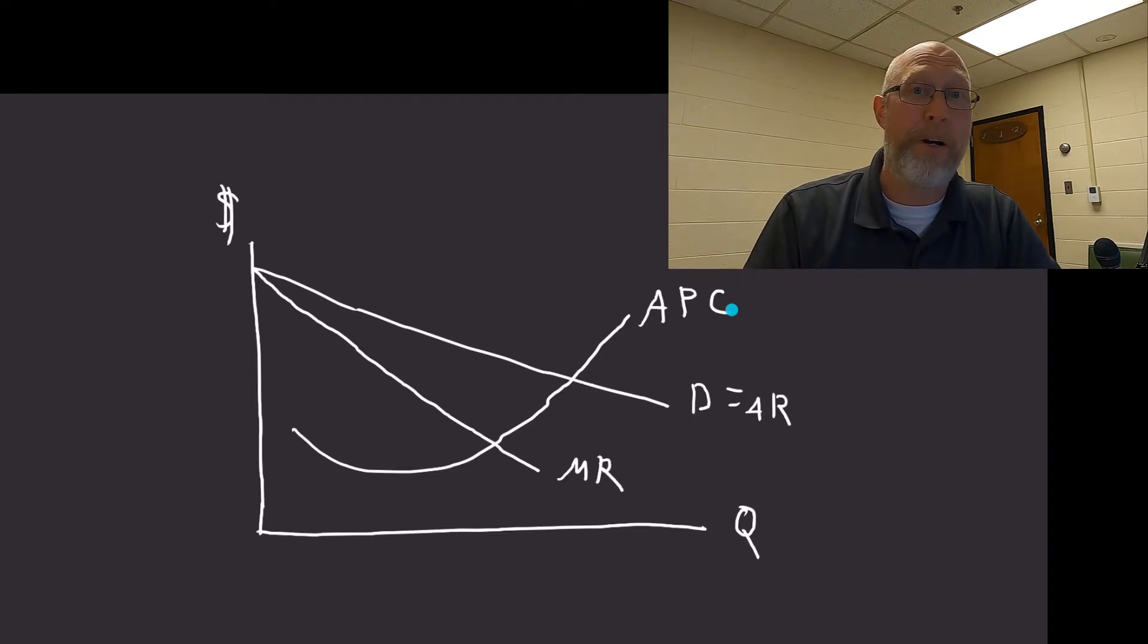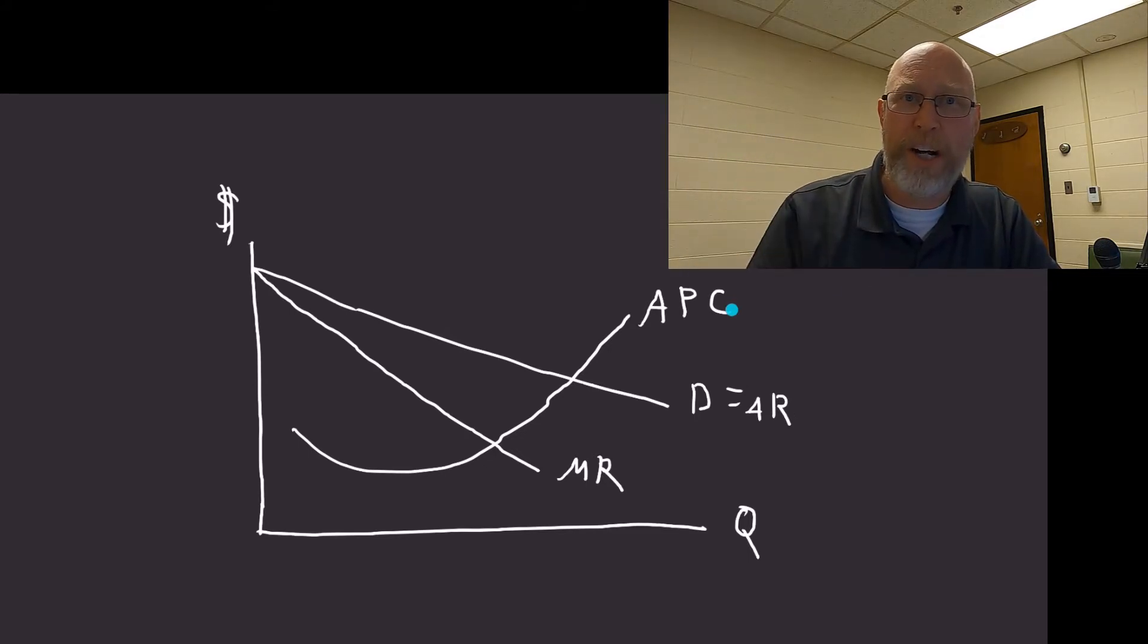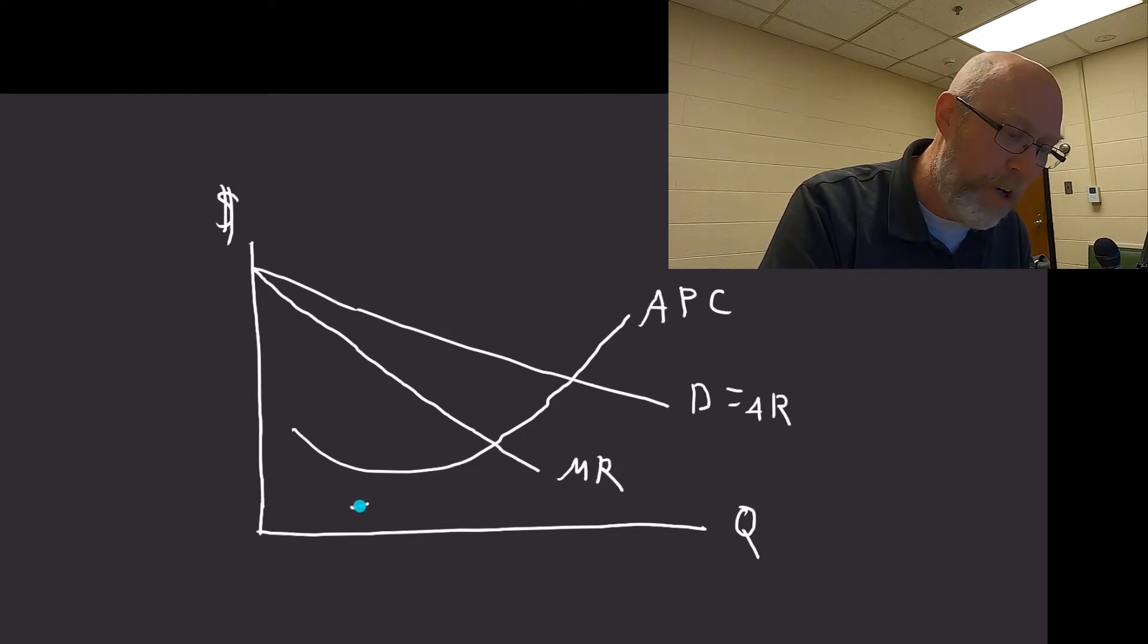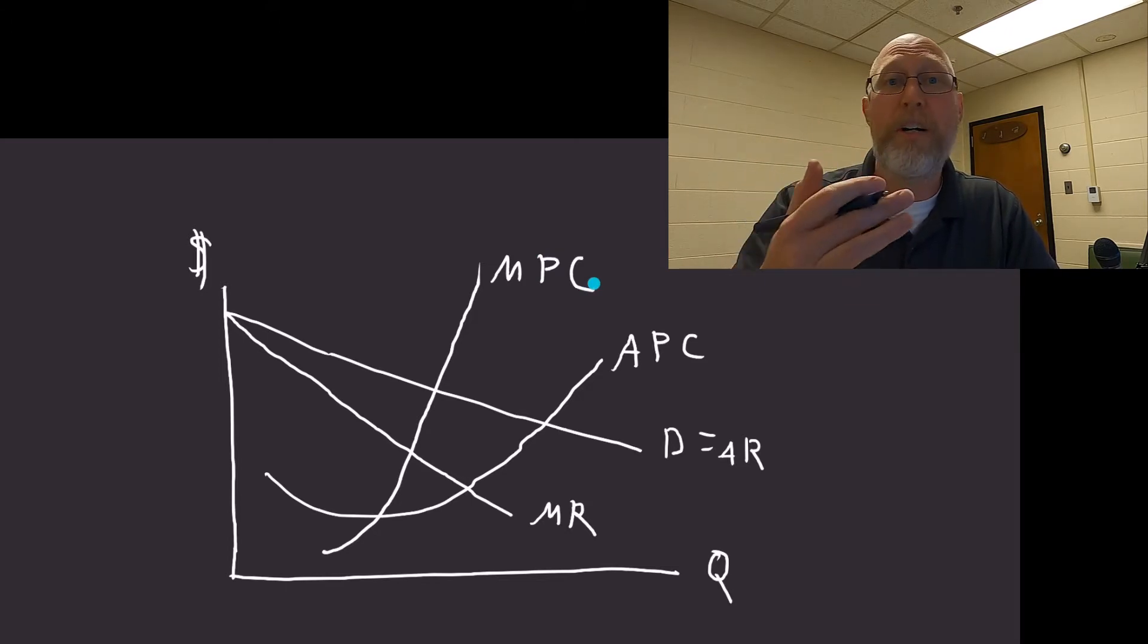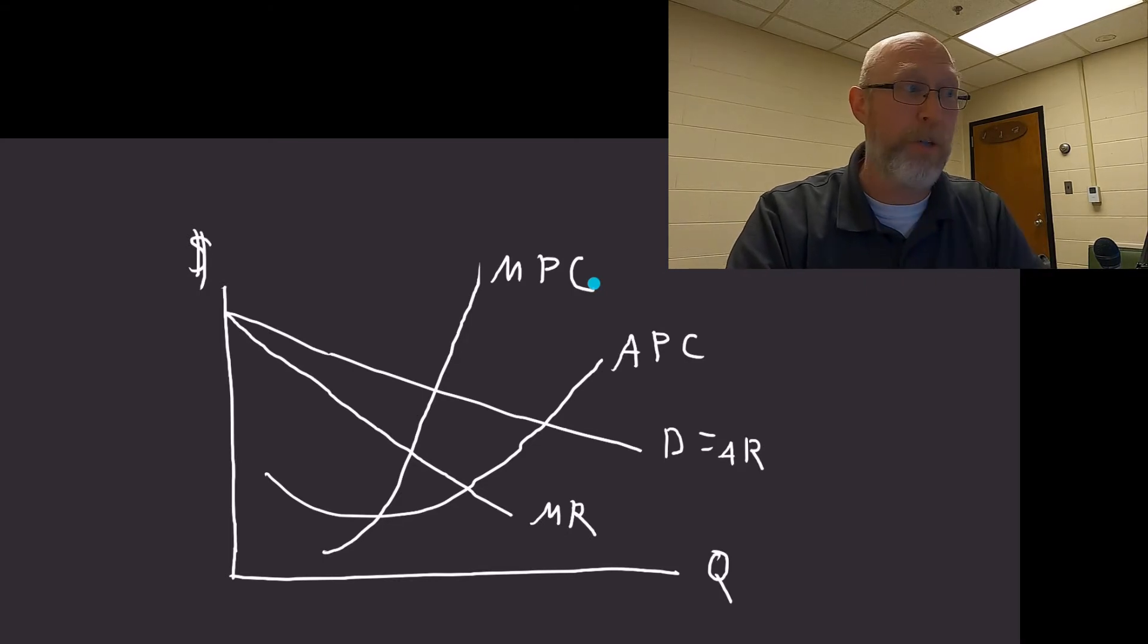That ignores the cost of buying the product. Imagine that the co-op didn't have to pay to buy the product. The APC is what it would cost for the co-op to then deliver that product to an eventual consumer, whether they're processing it or not. The APC is the average processing cost, what it costs the marketing cooperative to deliver that product to some end user, ignoring what they paid for the product. And there's also going to be an MPC, a marginal processing cost. The marginal processing cost is the extra cost of processing one more unit.